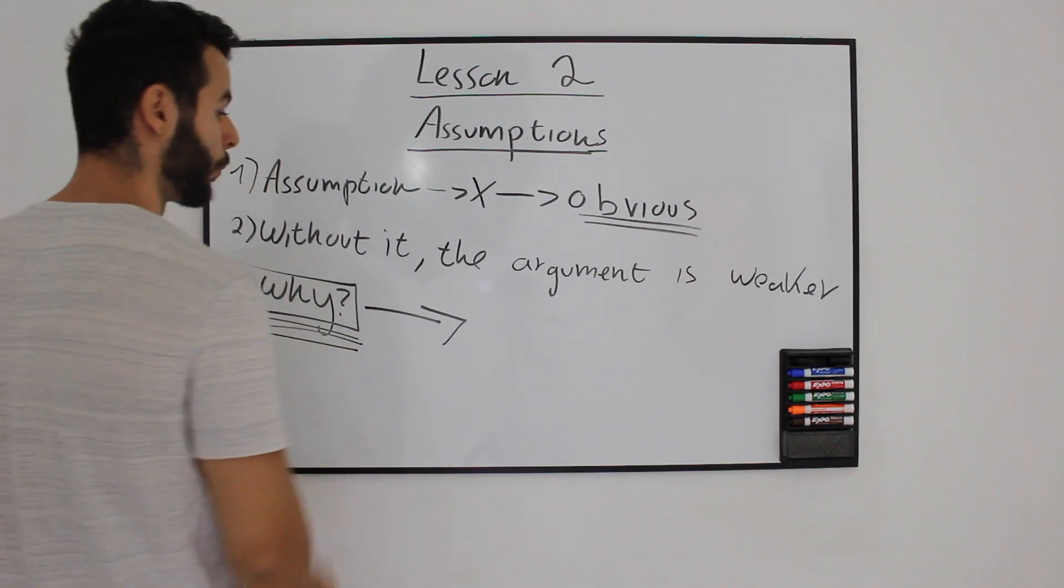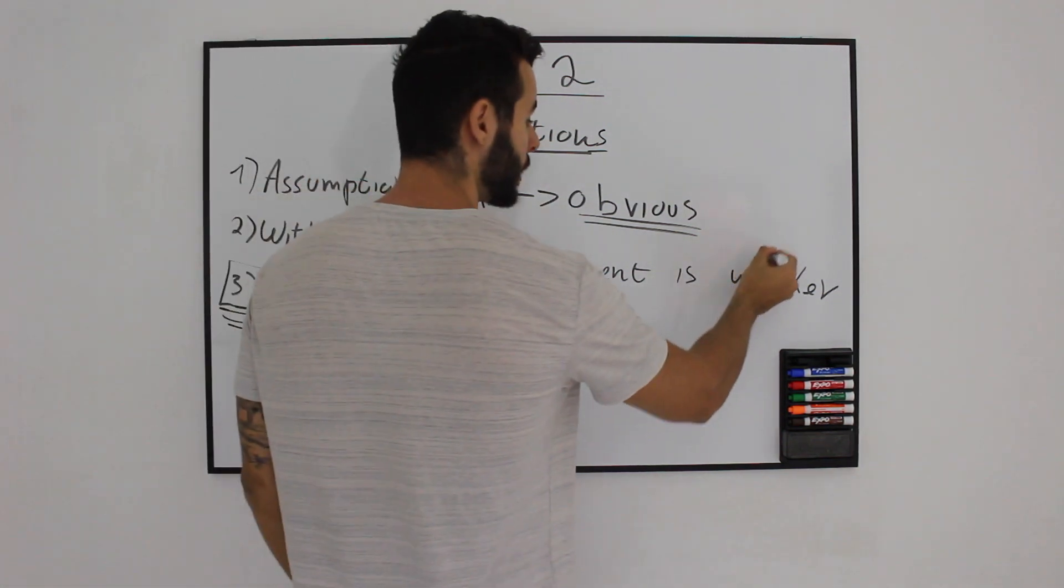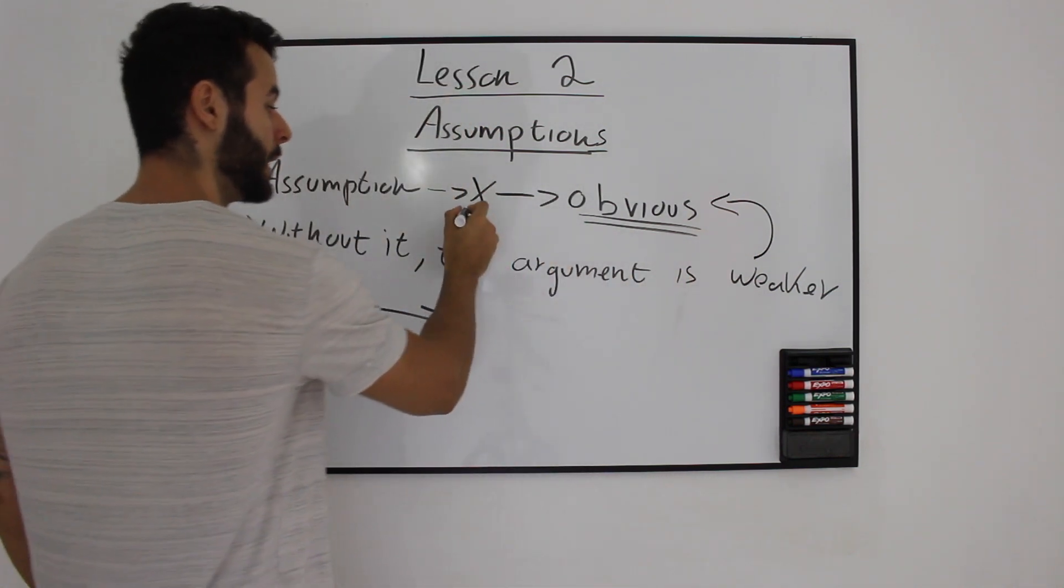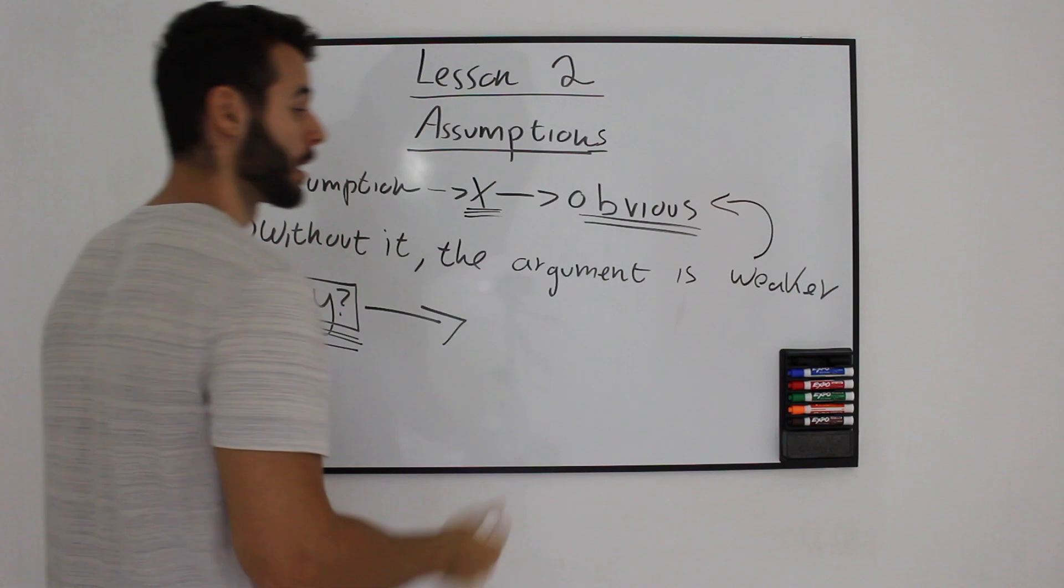So, we need to find something that strengthens the paragraph through the assumption of the writer. And we need to ask ourselves, why? Why is it weaker? Why is it obvious? And of course, it isn't appearing inside the text. So, let's go, let's dive inside the question and see if we are right.